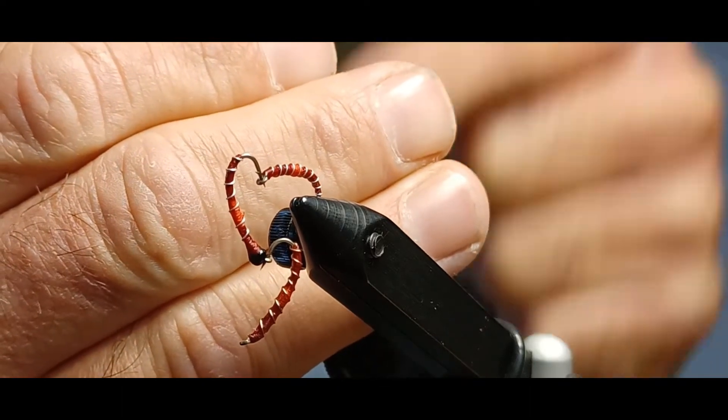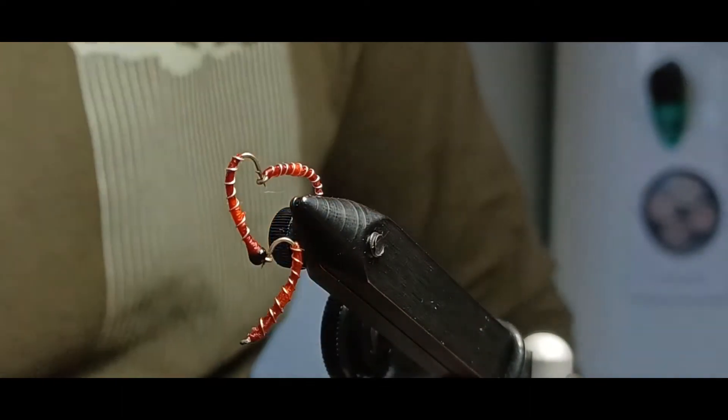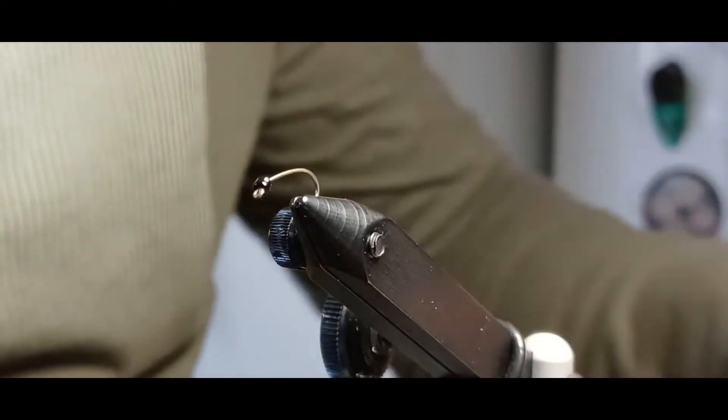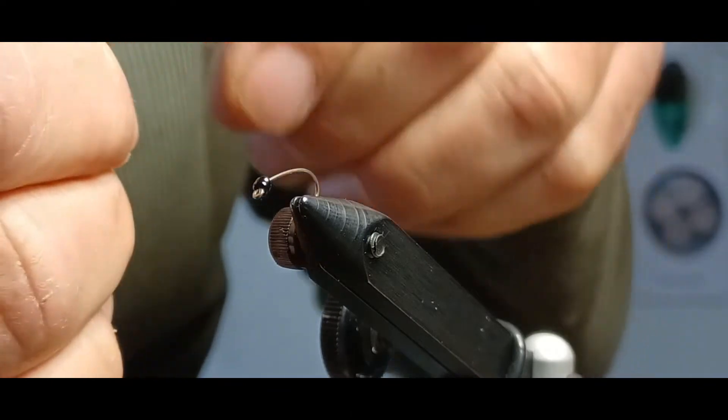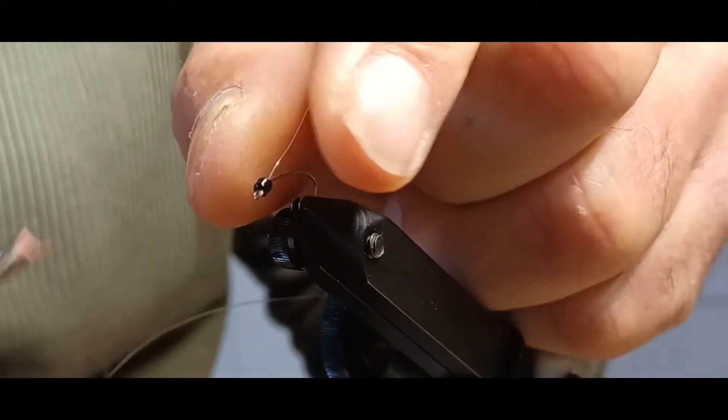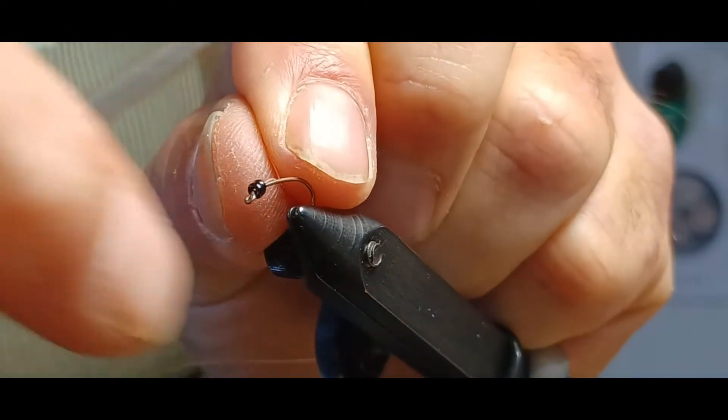I'm going to go ahead and get a bead on the hook, get it in the vise, and get this thing started. We've got our hook and bead in the vise there. I'm going to take my wire here real quick, and I'm going to shove it up underneath that bead before starting my tie-on here with my thread.